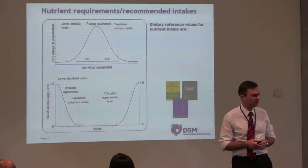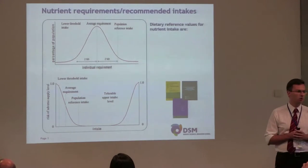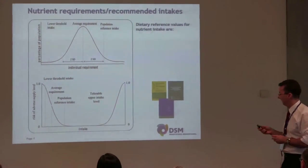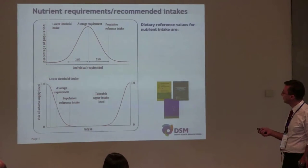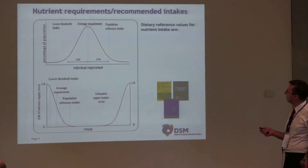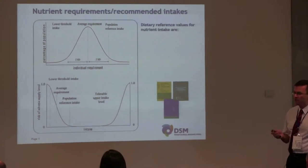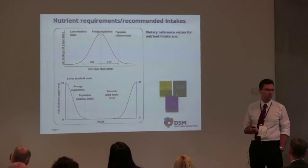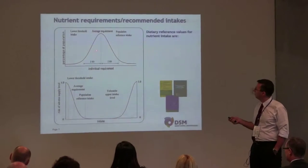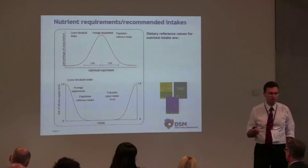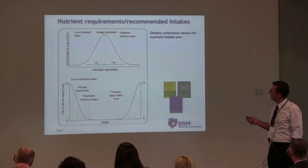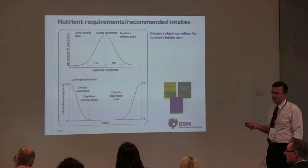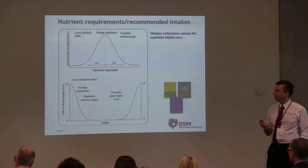My first slide is about nutrient requirements and the corresponding recommended dietary intakes in general. This first graph shows that the average requirement for any micronutrient or vitamin is defined as the requirement of 50% of the total population. This is called the estimated average requirement, while another measure called population reference intake corresponds to the needs of 97% of the world population.